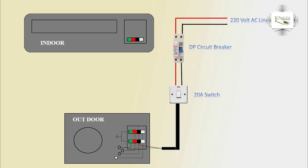Outdoor to Indoor connection: 4 Terminals. First Terminal — White, means Controller Terminal. Second — Negative Terminal. Third — Red, Positive Terminal. And last — Green, Action Terminal. Outdoor to Indoor connection complete.